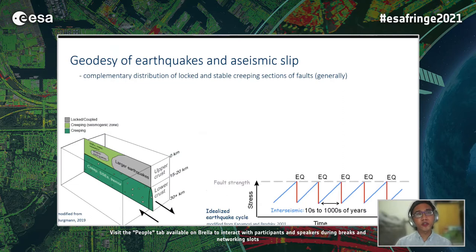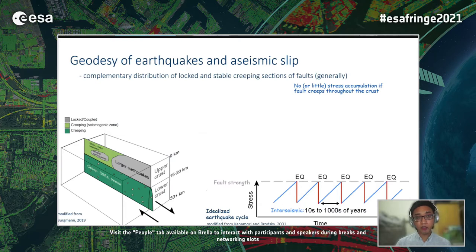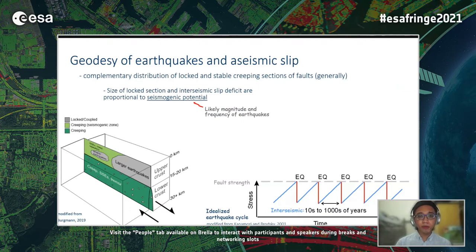Many geodetic studies on faults show the generally complementary distribution of earthquake rupturing and creeping sections of faults. Physically, creep — the slow gradual slip on faults — prevents the accumulation of stress. If a fault is locked, an idealized model of the earthquake cycle shows interseismic accumulation and release of stress that results in earthquakes. An important part of understanding the seismogenic potential of a fault is constraining the extent of locking and creep in the interseismic period, which allows us to estimate the potential size and recurrence of earthquakes.